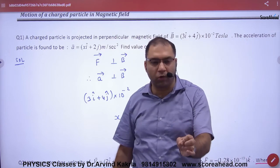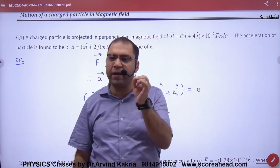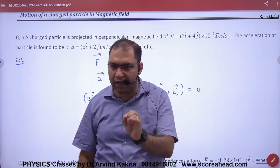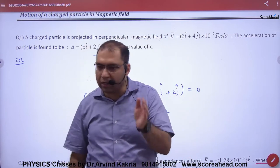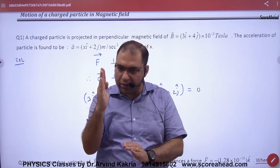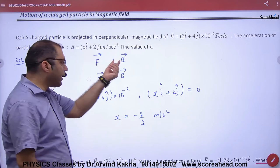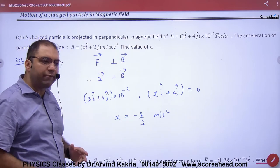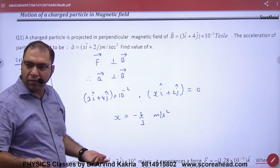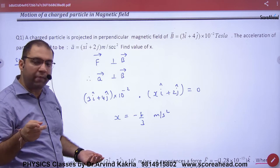First rule: when a particle moves in a perpendicular magnetic field, it will move in a circle. In a circle, magnetic force and the magnetic field will be 90 degrees. The direction of force and acceleration is the same. FM force, magnetic force and magnetic field is 90.